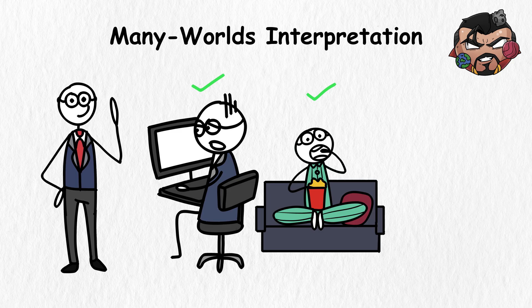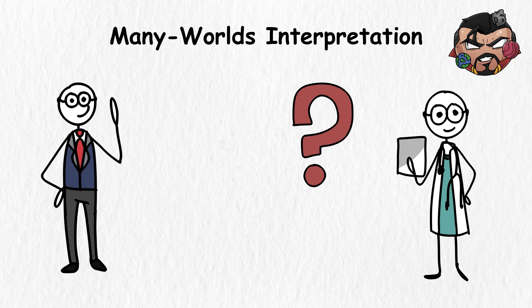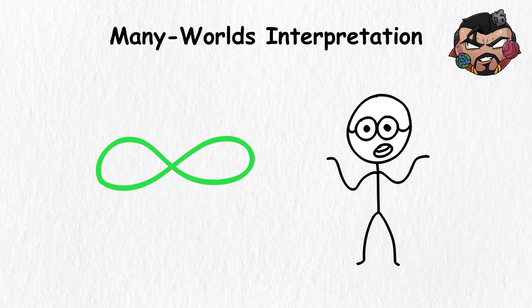There's one universe where you became a lawyer, while another universe has a version of you that's a doctor. These universes are all based on the individual decisions you make daily, and that's why there's an infinite number of them.